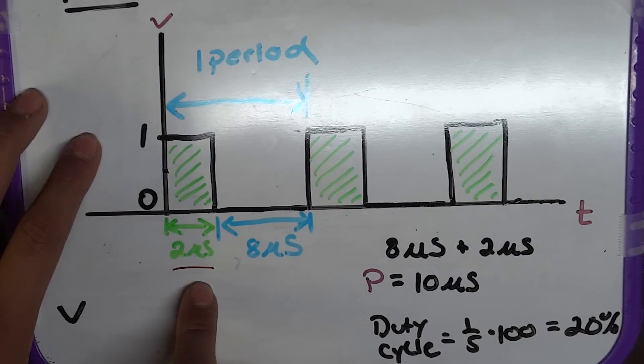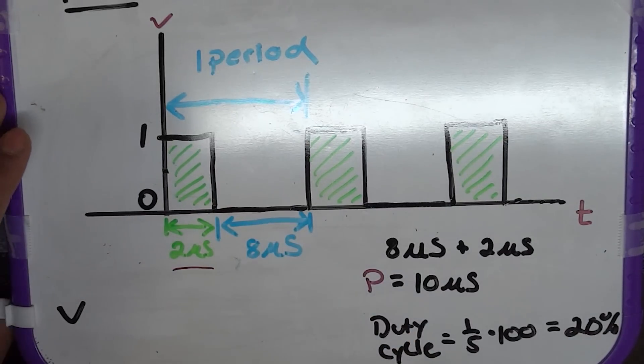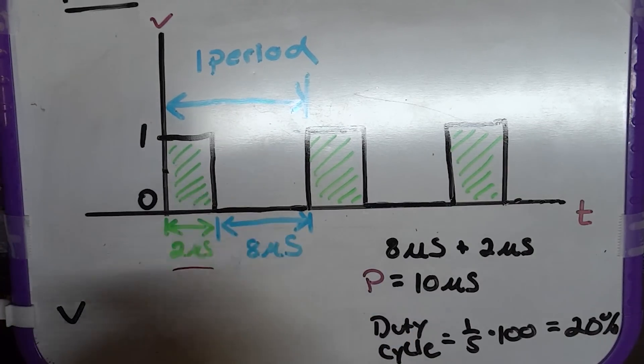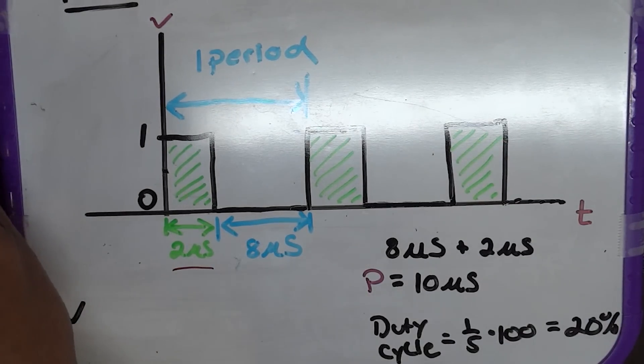So, you have 1 volt for 2 microseconds and no voltage right here for 8 microseconds. So, you could calculate this through the percentage of the duty cycle. Now, this is only true at higher frequencies and really it would depend on the device.